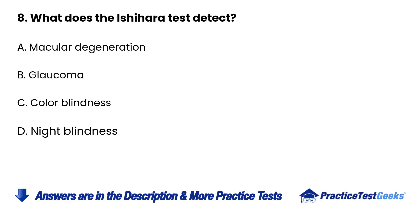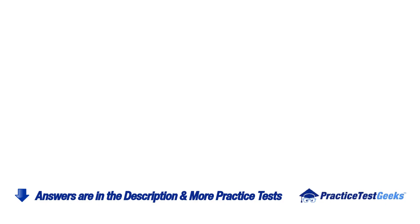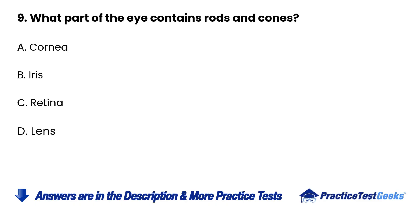8. What does the Ishihara test detect? A. Macular degeneration B. Glaucoma C. Color blindness D. Night blindness